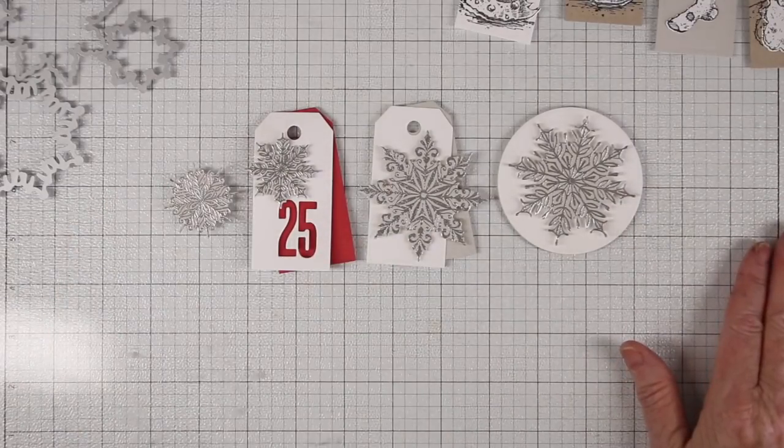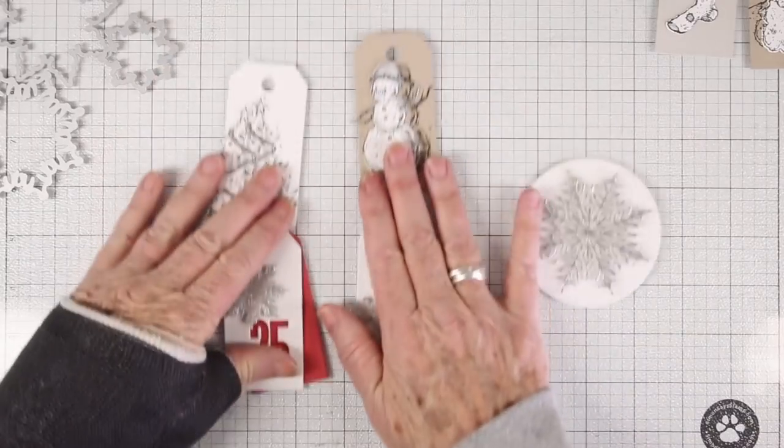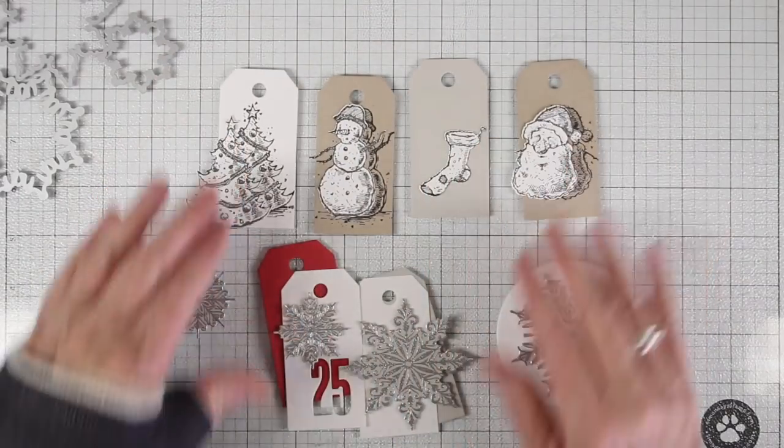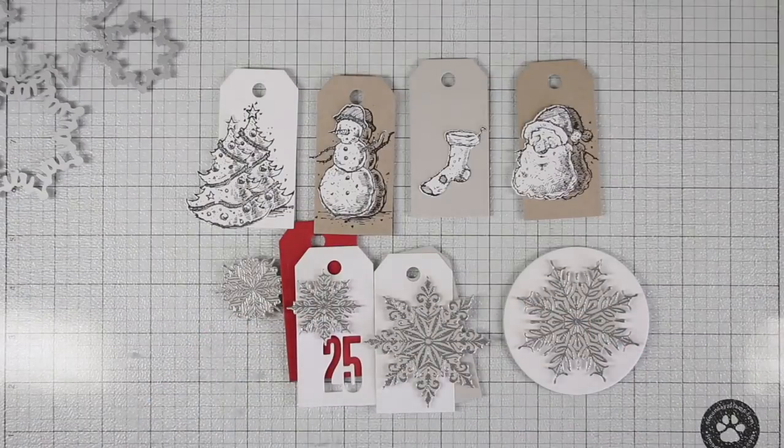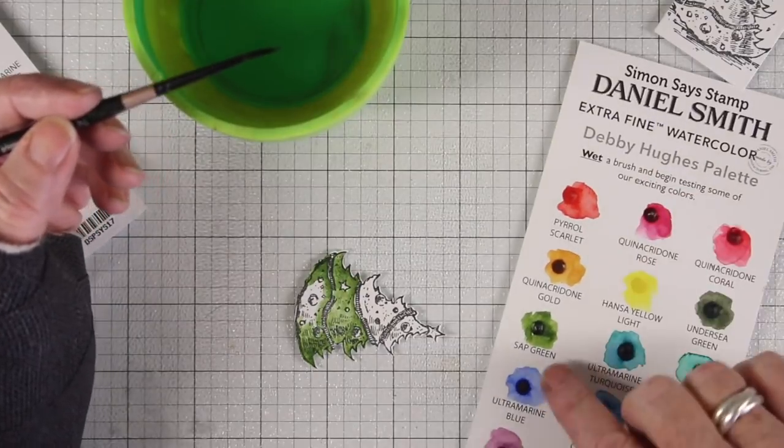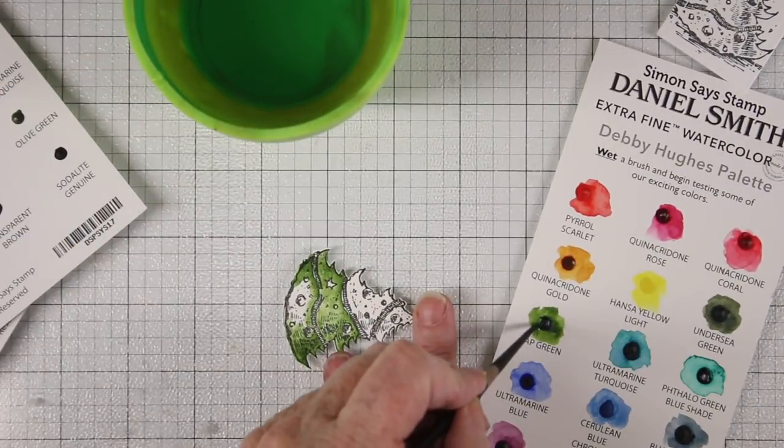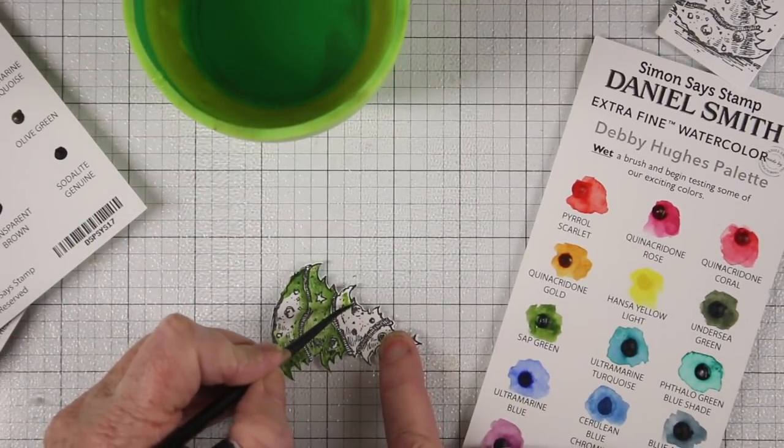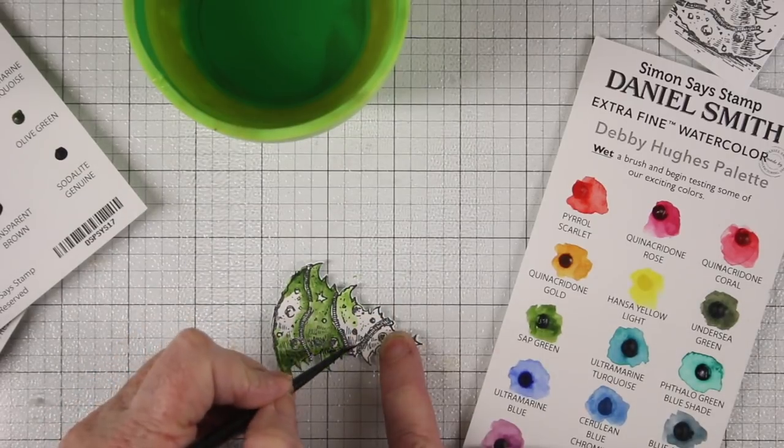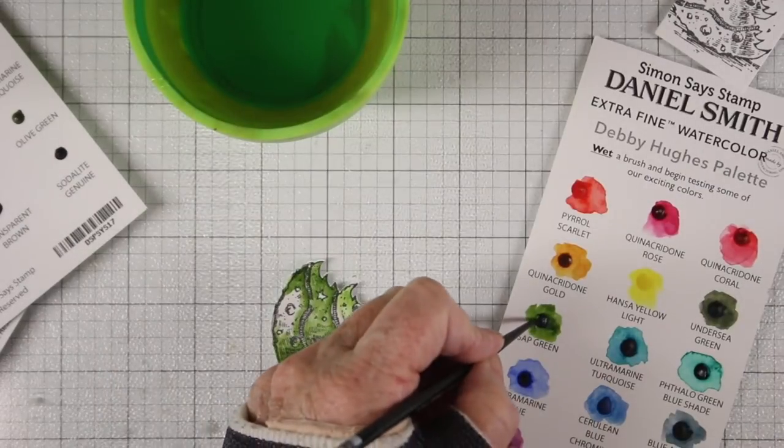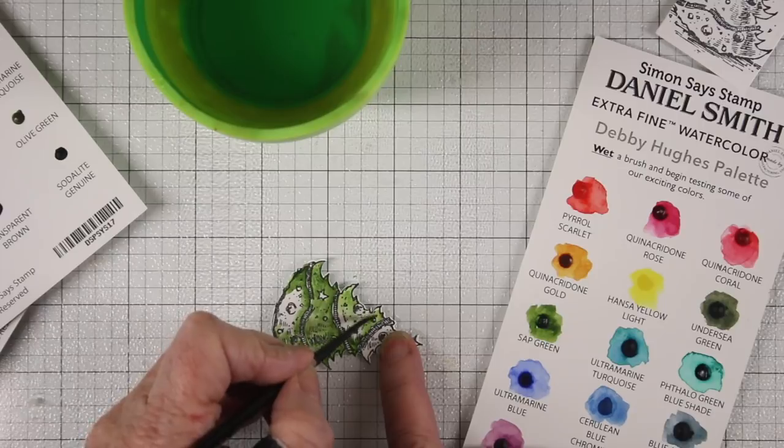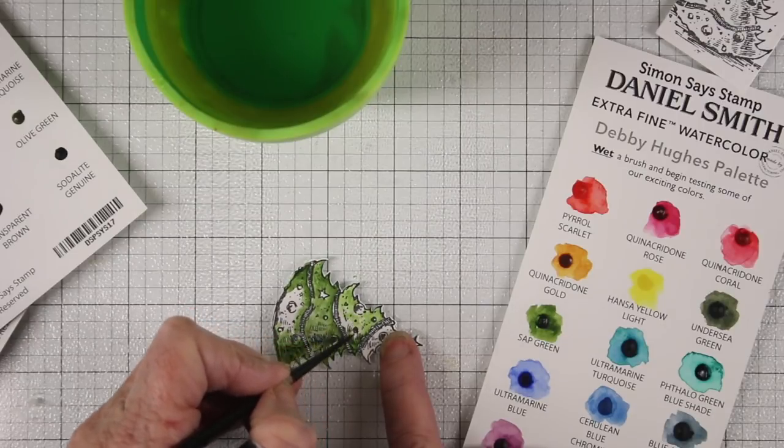So now I have some cute tags and some more elegant tags and I can start coloring in on my images. I'll be using the Danielle Smith Debbie Hughes palette of watercolors and this is the Simon Says Stamp color palette. I'm just doing some really quick watercolor. It helps because I'm a little bit gimpy right now with my hand and the watercolors are really easy to do. So I'm just dabbing on a wet brush onto that paper palette and I can pick up some paint and color in onto my tree.